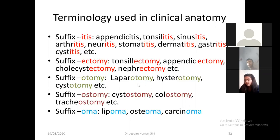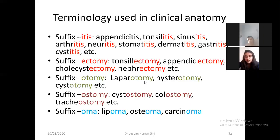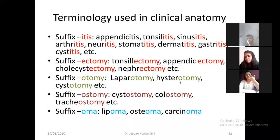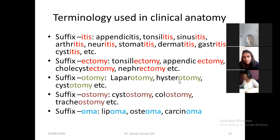So see here — laparotomy means you are going to open the abdominal cavity and then close it after the intervention. Hysterotomy means you are going to open the uterus and close it. During cesarean section, you open the uterus, remove the baby, and then close it — that is hysterotomy. Laparotomy: opening of abdominal cavity and closing.